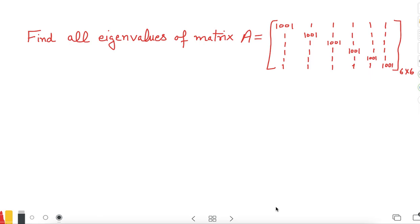Hello, so this question is about finding all eigenvalues of a matrix where the matrix is given as a 6 by 6 matrix with all diagonal elements as 1001 and non-diagonal elements as 1.